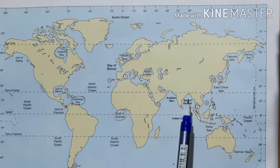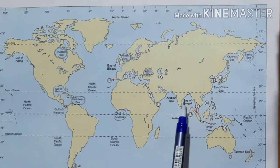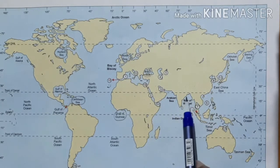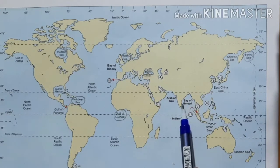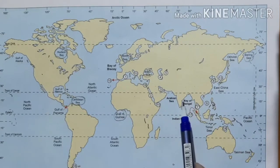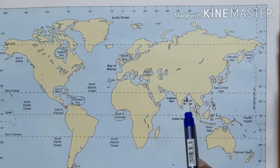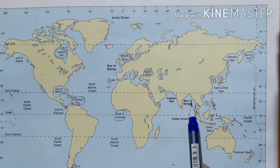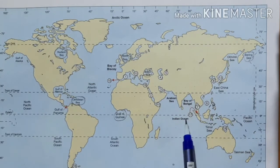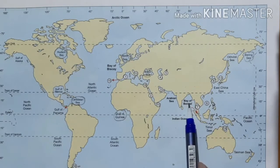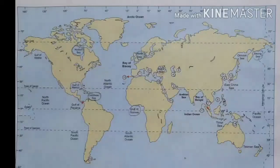Another water body similar to the gulf is the bay. The Bay of Bengal is an example. Like a gulf, a bay penetrates into the continent on three sides, but the opening towards the major ocean is very wide. That is the key difference between a bay and a gulf.